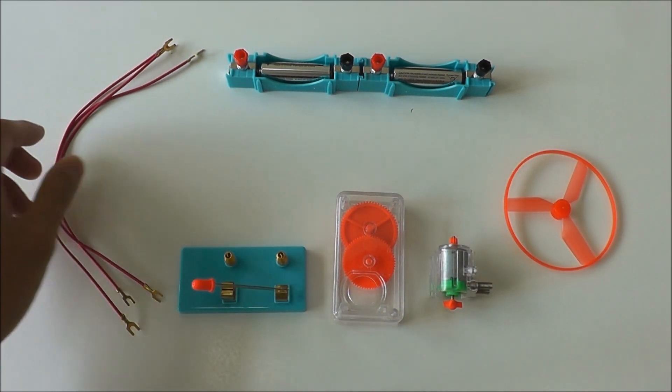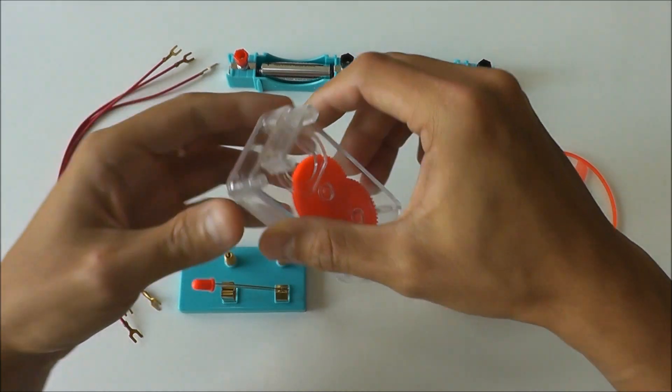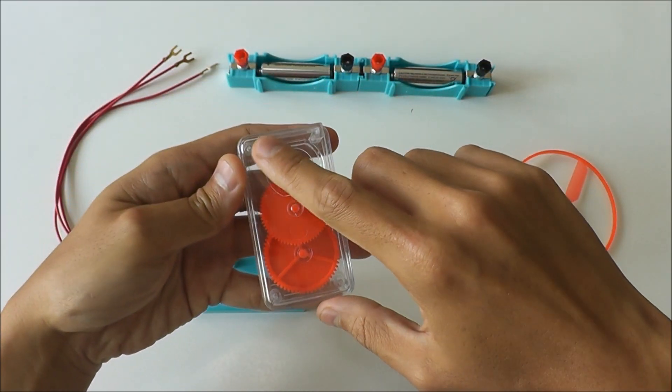a switch, and three wires. First of all, we need to connect the motor to the gearbox. You can see that there is a groove here on the